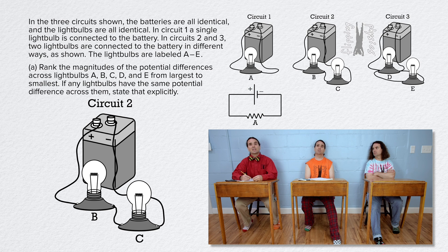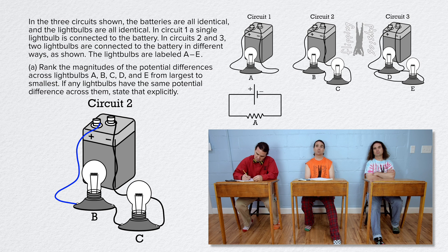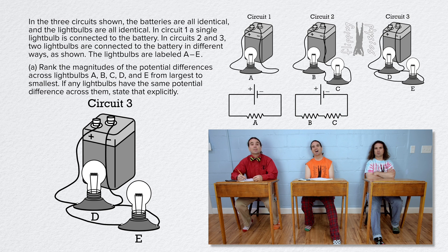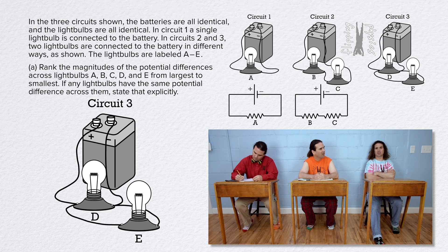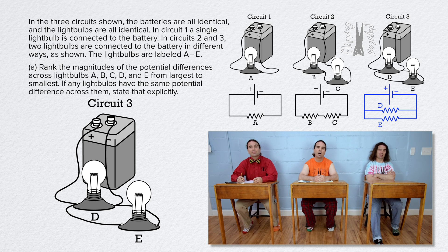Circuit 2 has one battery and two light bulbs or resistors. One wire goes from the positive terminal of the battery to light bulb B, and there is a wire from B to C, and then a wire from C to the negative terminal of the battery. Those light bulbs are in series. Circuit 3 also has one battery and two light bulbs. In this circuit, wires go from the terminals of the battery to both light bulbs without going through either light bulb — in other words, the light bulbs are in parallel.